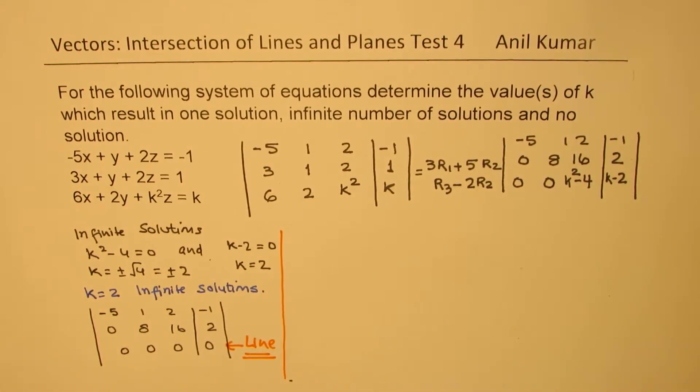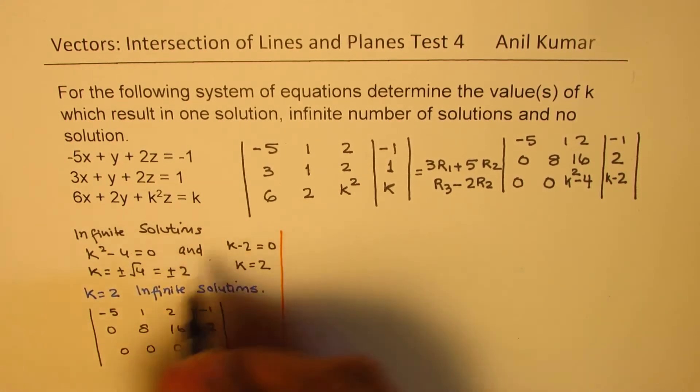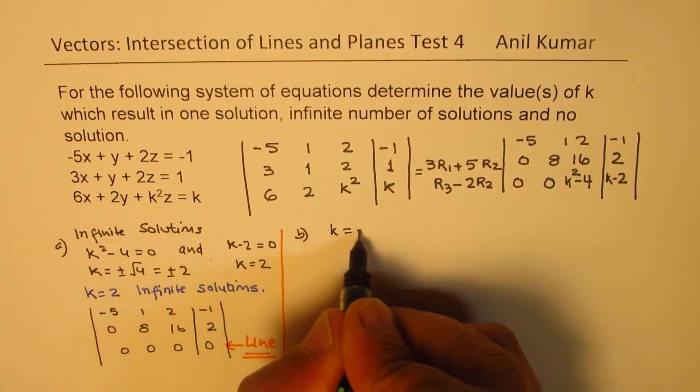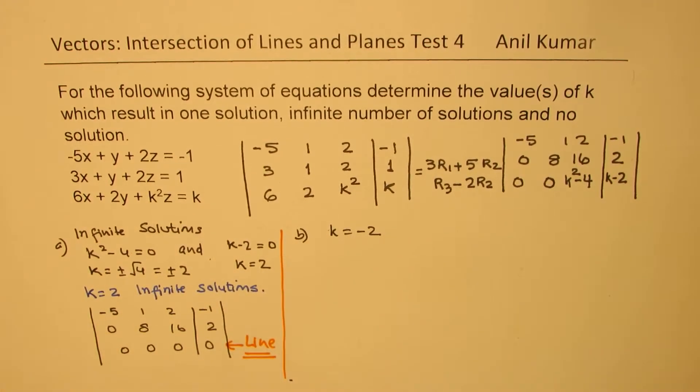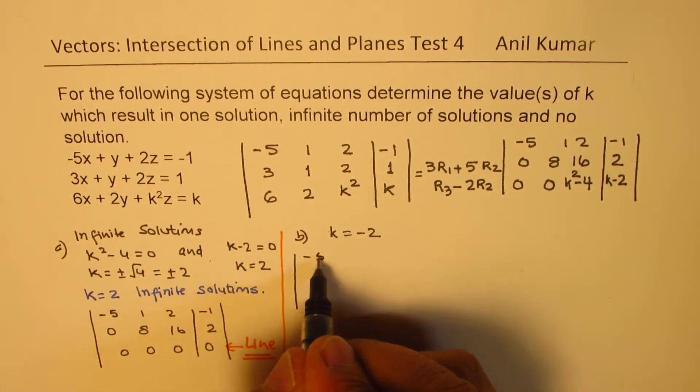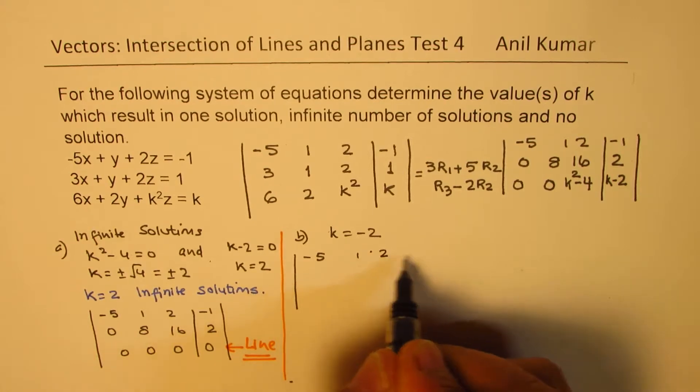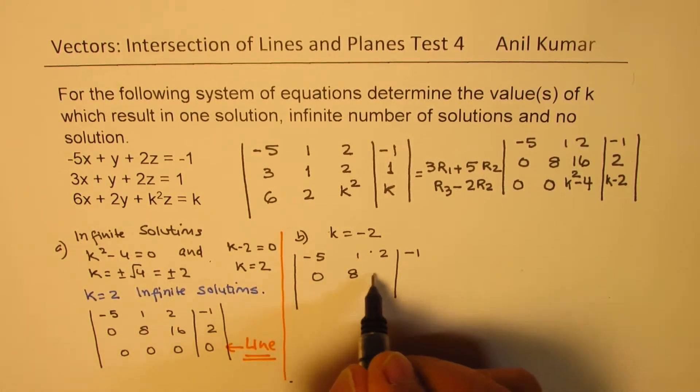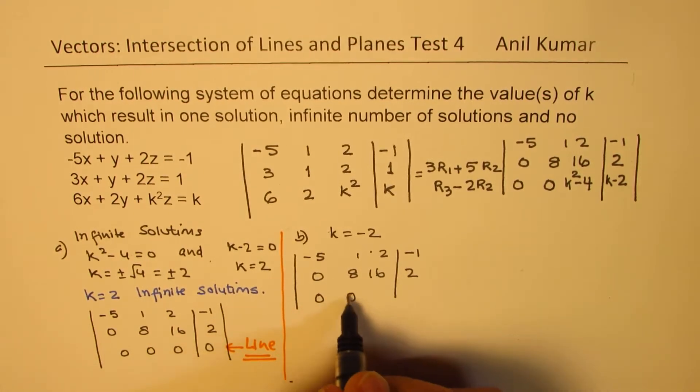Now, if k is not 2, but if it is minus 2, so this is case A and B. If I take k equals to minus 2, it is very important to understand this concept. So we do get 0, 0, 0 here, but if it is minus 2,